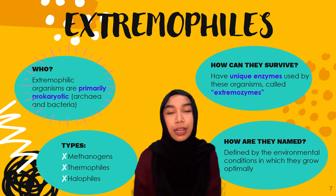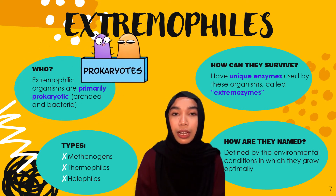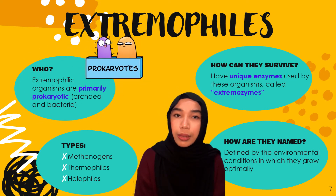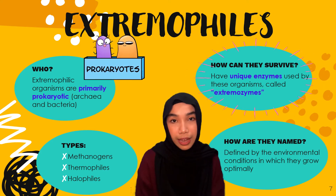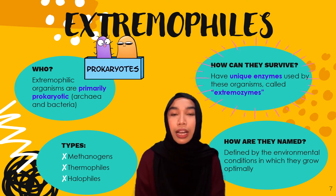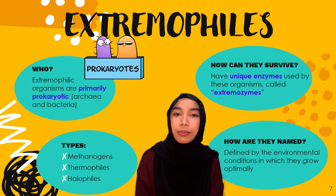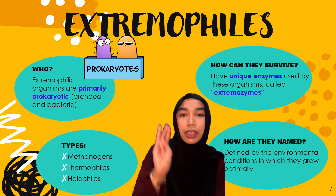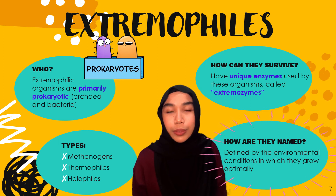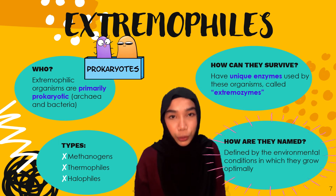Extremophiles are primarily prokaryotic organisms — they are either archaea or bacteria, though there are some eukaryotic extremophiles, just not very common. The reason these organisms can survive in extreme conditions is because they have special enzymes called extremozymes that help them survive. There are a few types of extremophiles, but in this video I'll be talking about three: methanogens, thermophiles, and halophiles. These extremophiles are named by the environmental conditions in which they grow or thrive in.